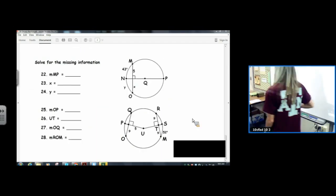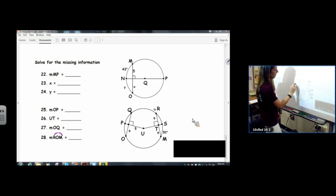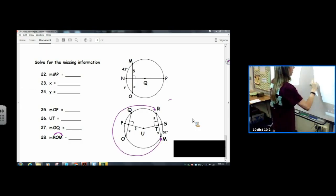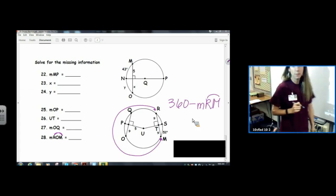Number 28 is the next one we're looking at. We're looking for the measure of arc R-O-M. So this arc is pretty much 360 minus the measure of R-M.